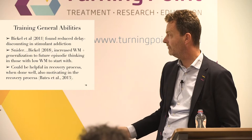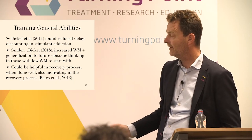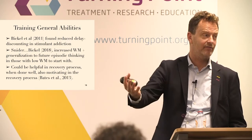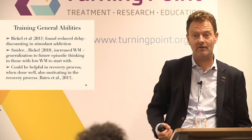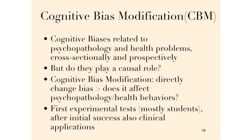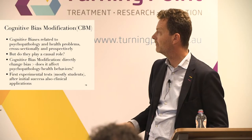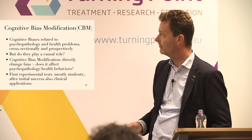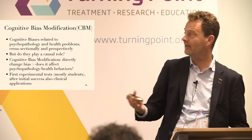As Marsha Bates has shown in an interesting paper, when people get better on a function like that, the feedback is very motivating in the process of change. Now we go to the other branch: cognitive bias modification. I'll explain how it originated, because that's actually important in appreciating how the effects look across all the studies. Cognitive biases are related to psychopathology and health problems, both cross-sectionally and prospectively.